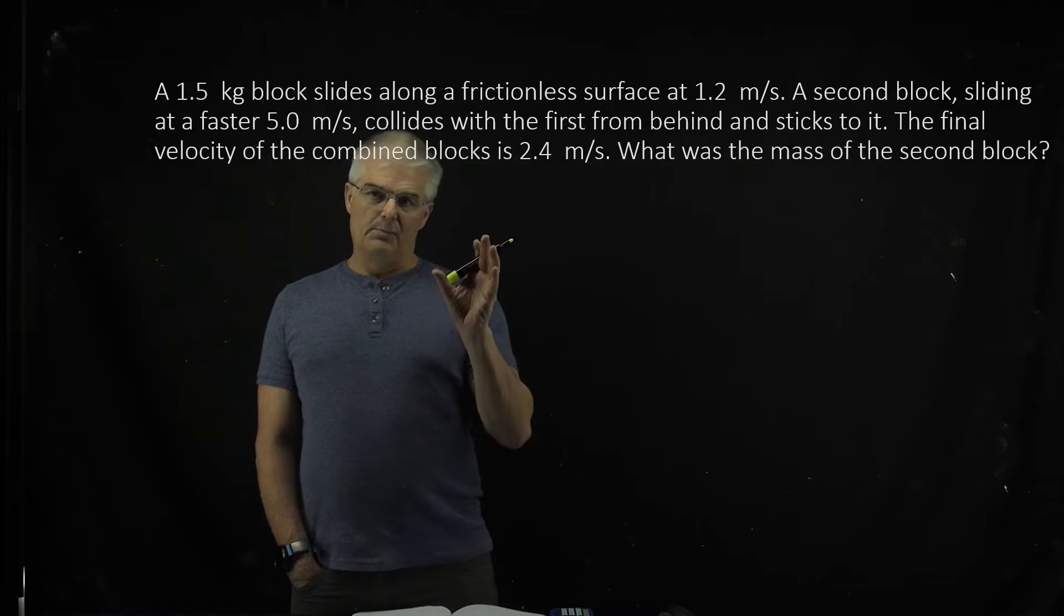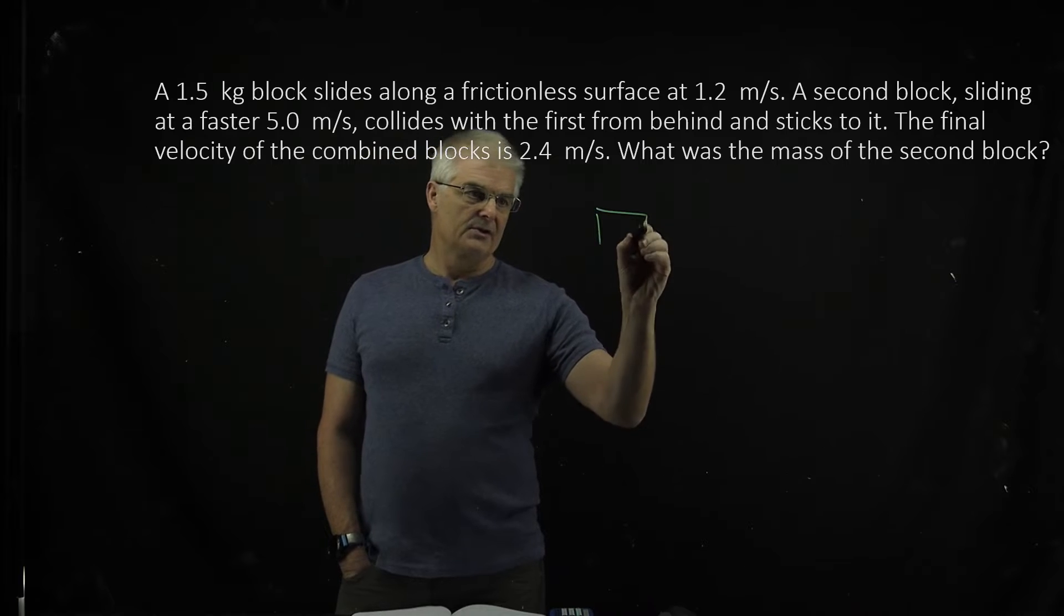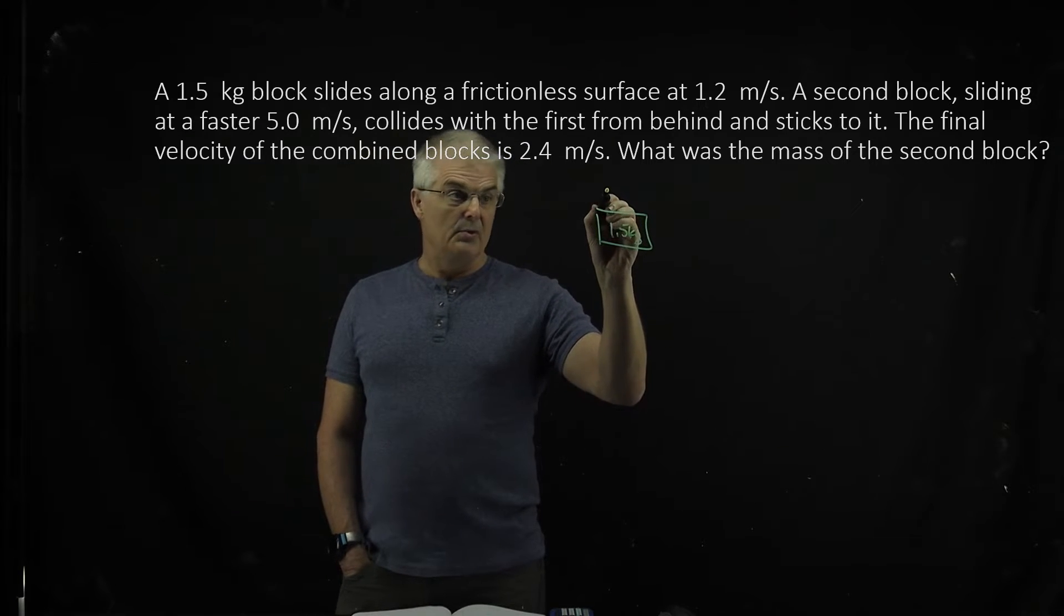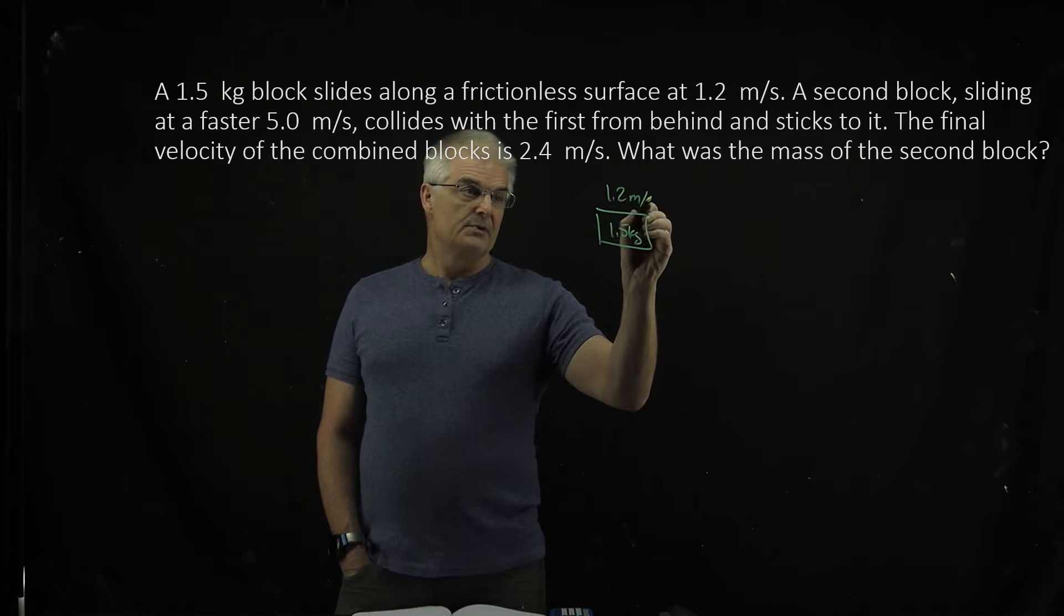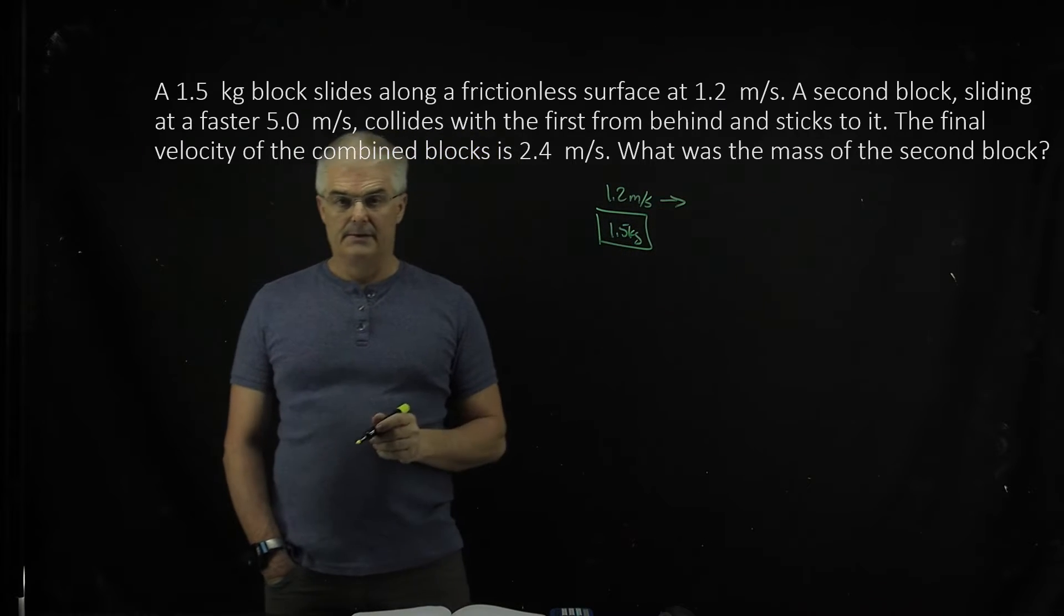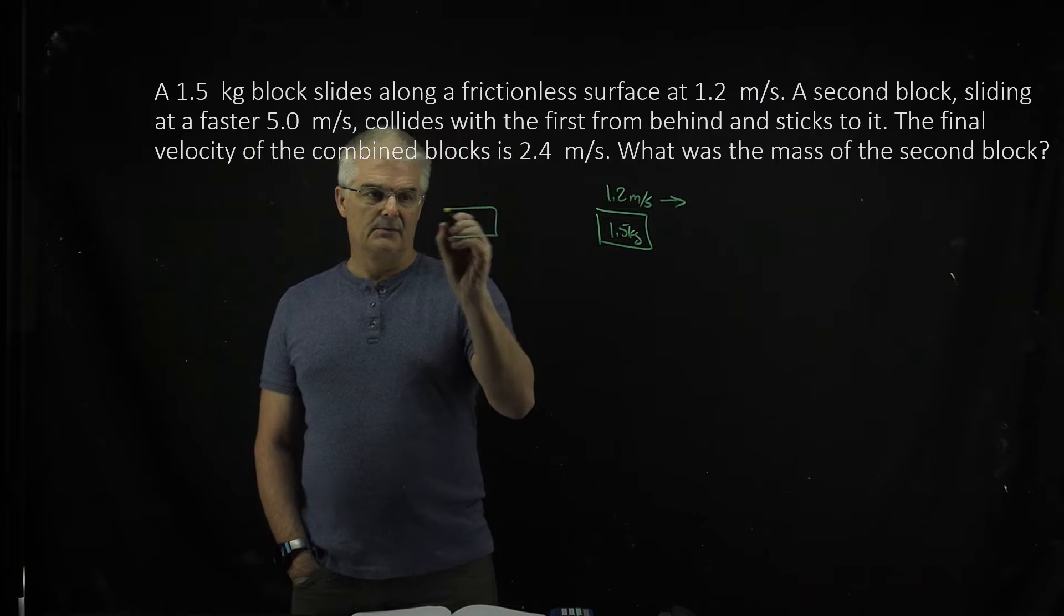So we've got the 1.5 kilogram block sliding along a frictionless surface, moving at 1.2 meters per second, we'll say to the right. A second block, we don't know its size.